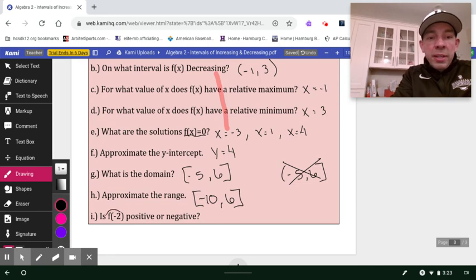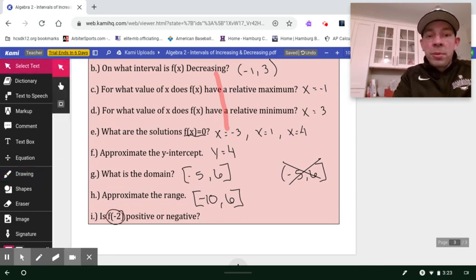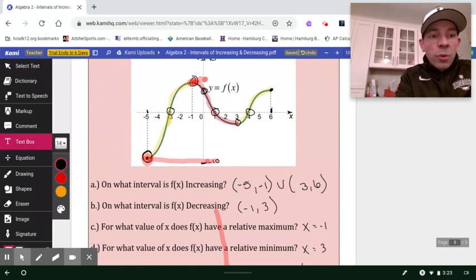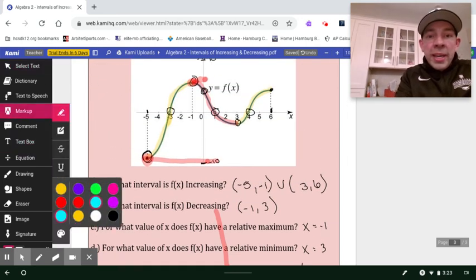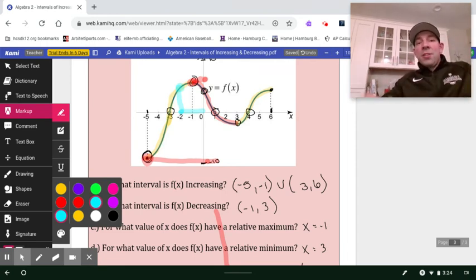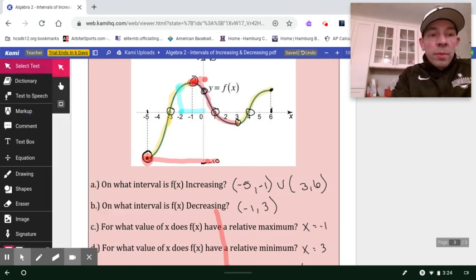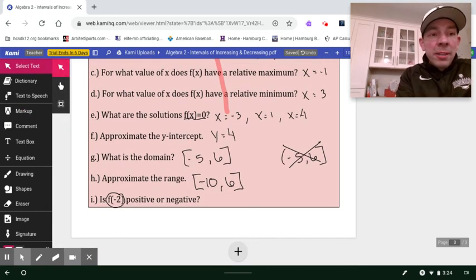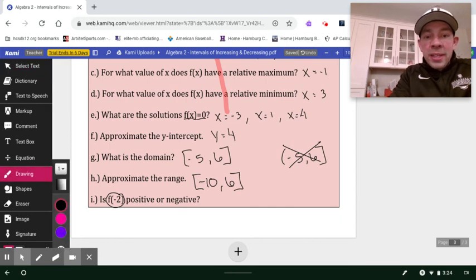And then let's see if we can evaluate F of negative two and at least determine whether that value is going to produce a positive or a negative output. So let's see, when we're looking at x equals negative two, which puts me right here, the graph sits right here. So that's anything above the x-axis is going to produce a positive output. So even though we don't know the exact value of F of negative two, we can certainly say that the answer is going to be positive.